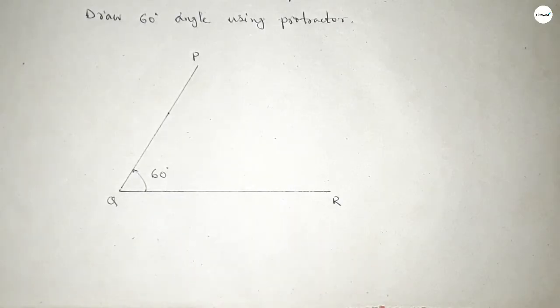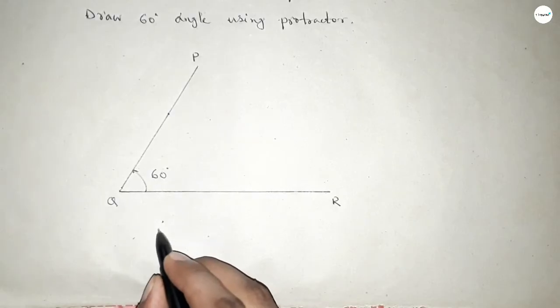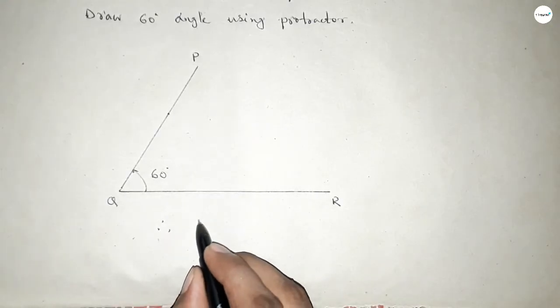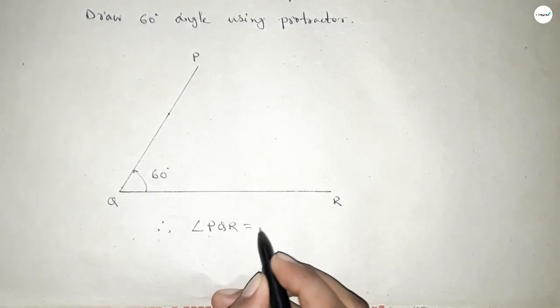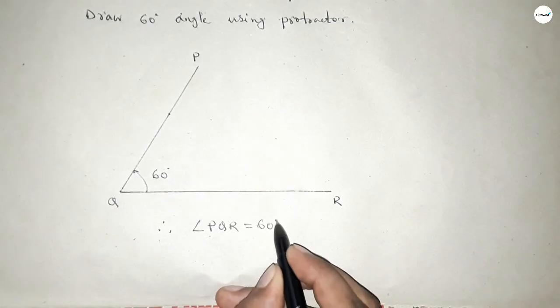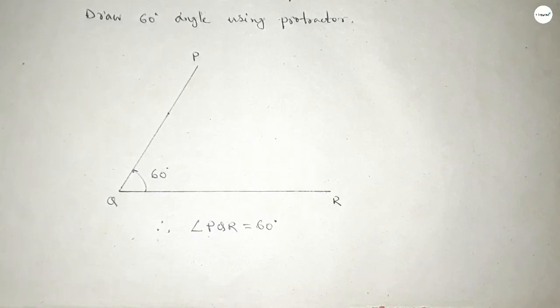Therefore angle PQR equals 60 degrees. That's all, thanks for watching. If this video is helpful then please share it with your friend. Thanks for watching.